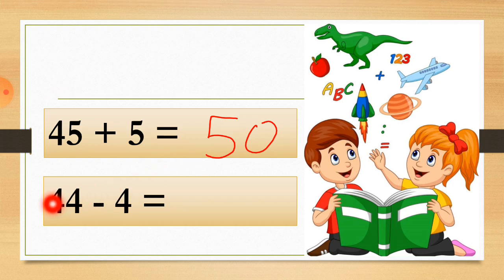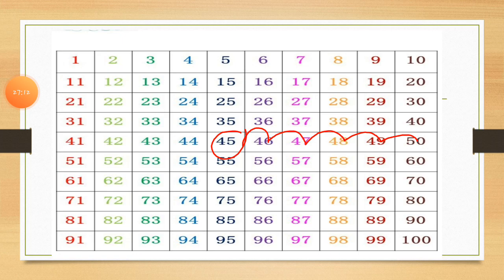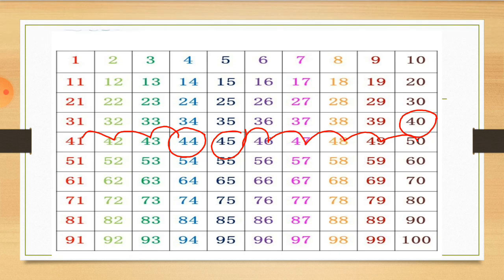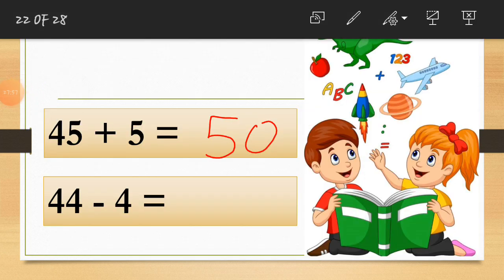Next: 44 minus 4. In the 100s grid, I circle 44 and move back 4 steps to the left: 1, 2, 3 — and the 4th step brings us to 40. So 44 minus 4 equals 40. I write 40 as the answer. Hope you understood how to add or subtract numbers using the 100s grid.